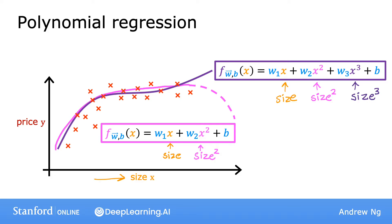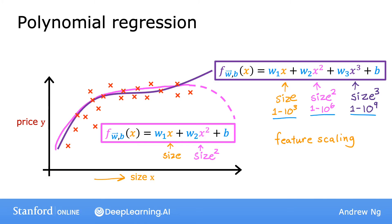I just want to point out one more thing, which is that if you create features that are these powers, like the square of the original features like this, then feature scaling becomes increasingly important. So if the size of the house ranges from say 1 to 1000 square feet, then the second feature, which is the size squared, would range from 1 to a million. And the third feature, which is size cubed, ranges from 1 to a billion. So x squared and x cubed take on very different ranges of values compared to the original feature x. And if you're using gradient descent, it is important to apply feature scaling to get your features into comparable ranges of values.